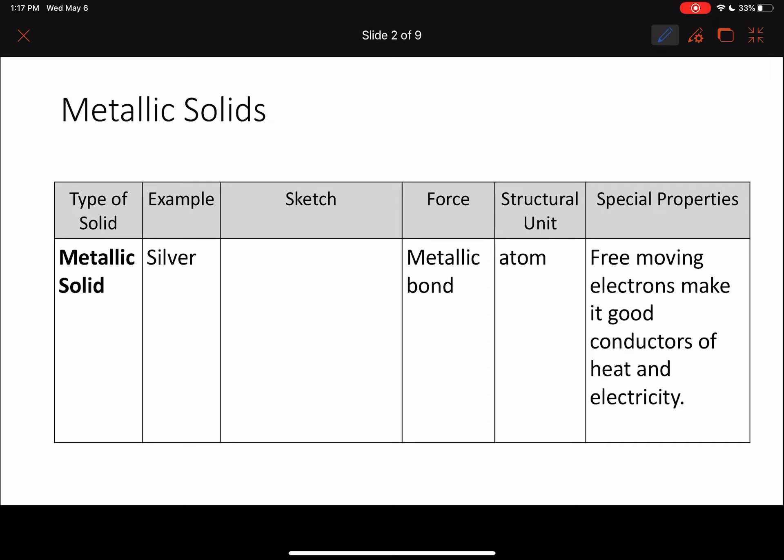Our first one is metallic solids. An example of this would be the element silver, like a silver ring or some sort of silver material. When we have a metallic bond, we have these nuclei, and usually we would have our electrons just around each individual nucleus. However, for metallic bonds that's not the case.